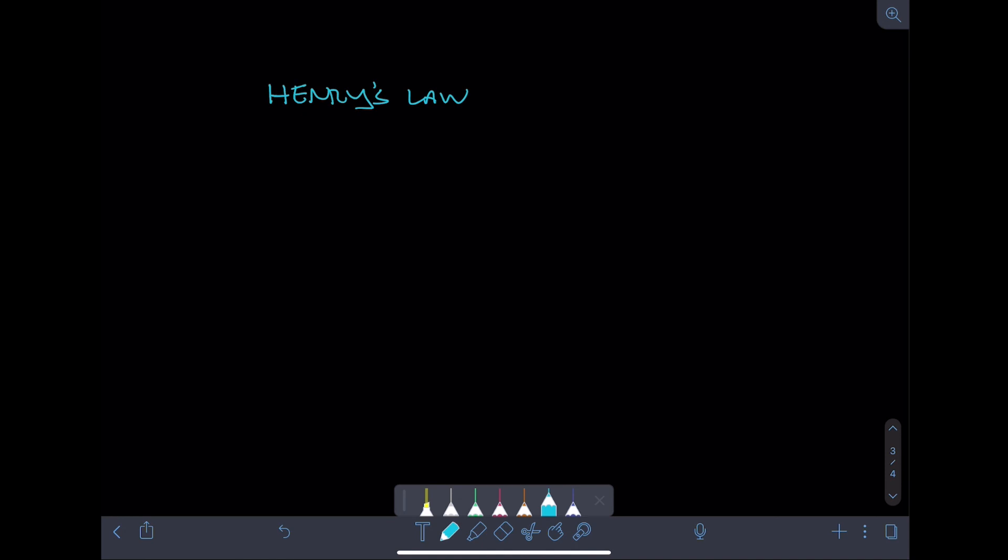So let's go over another physics concept. It's called Henry's Law. Henry's Law states that the amount of gas dissolved in a liquid is directly proportional to the partial pressure of that gas above the liquid when it's kept at a constant temperature. So what does that actually mean?